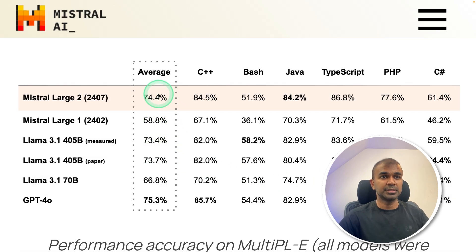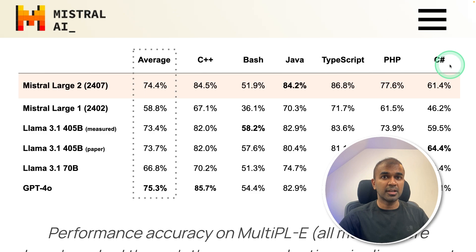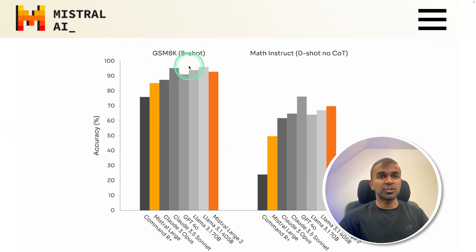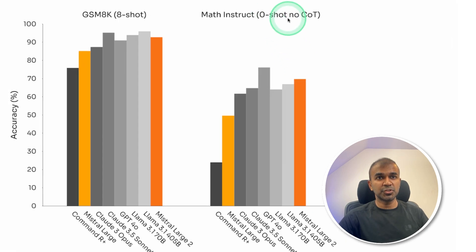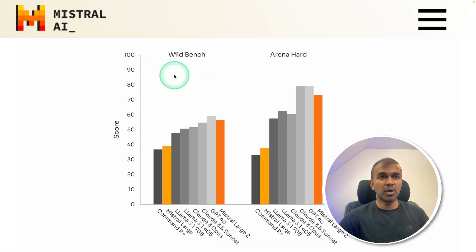For programming, Mistral Large 2 is much better than Llama 3.1 — for C++, Java, TypeScript, PHP, and C Sharp. For GSM 8K 8-Shot, Llama 3.1 is slightly better. For Zero-Shot No-Chain-of-Thought, Mistral Large 2 is slightly better. In regards to instruction following, alignment, WildBench and ArenaHard benchmarks, Mistral Large 2 is better than Llama 3.1 but slightly lower than GPT-4o.